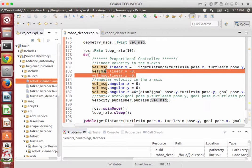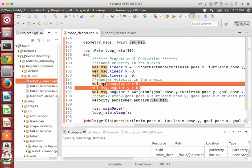So note here that linear_y and linear_z are equal to zero, and angular_x and angular_y are equal to zero.